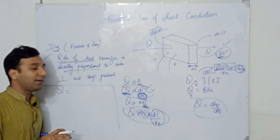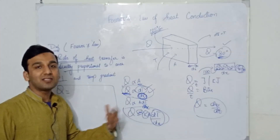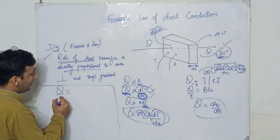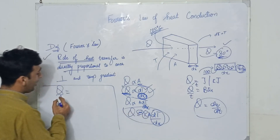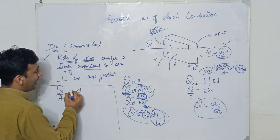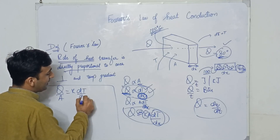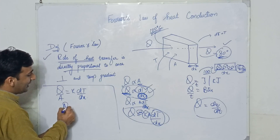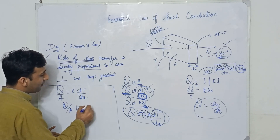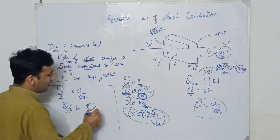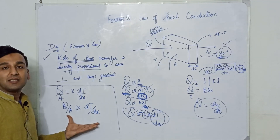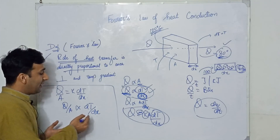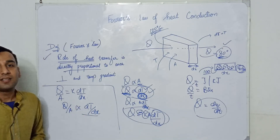We can also write a simpler form of Fourier's law. If I divide Q by the area A, I get K times dT/dx. Rearranging, Q over A is directly proportional to dT/dx. This means the rate of heat transfer per unit area — also called heat flux — is directly proportional to the temperature gradient. That is Fourier's law of heat conduction.